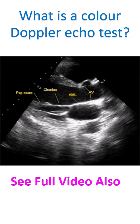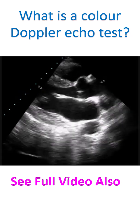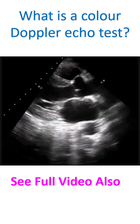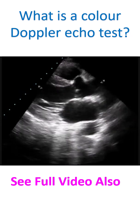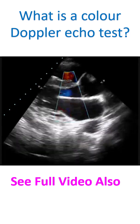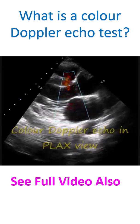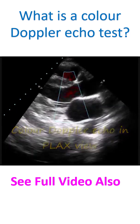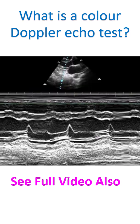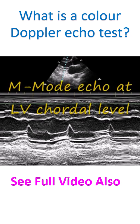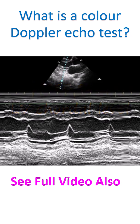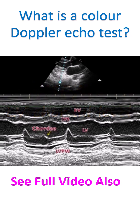In cardiology, color Doppler would mean color Doppler echocardiography. Color Doppler is used in ultrasound imaging in general to assess blood flow to the various organs by Doppler principles. Echocardiography is ultrasound imaging of the heart.